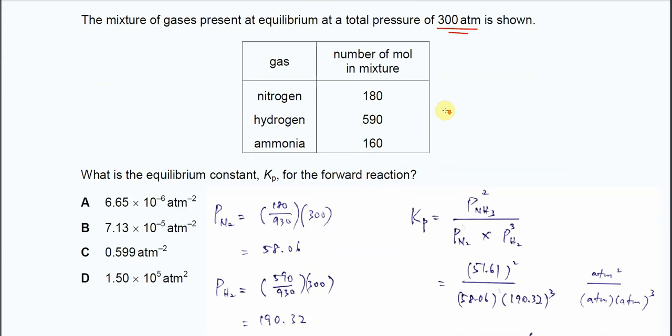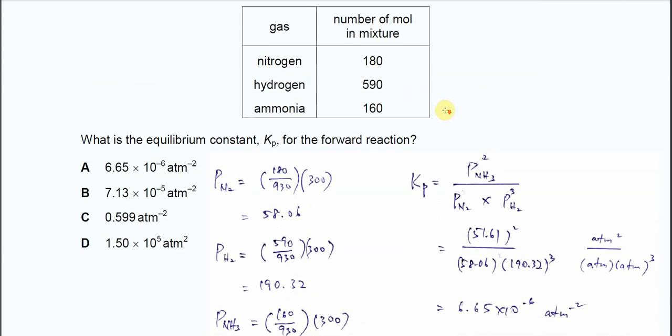This question is asking: what is the equilibrium constant Kp for the forward reaction?